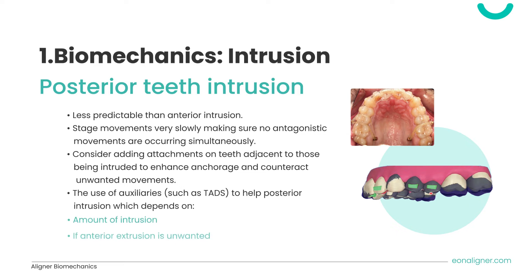In cases where posterior intrusion is desirable, consider the following. With clear aligners, posterior intrusion is less predictable than anterior intrusion. Plan movements at a slow rate, making sure no antagonistic movements occur simultaneously. Add attachments on teeth adjacent to those being intruded to enhance anchorage. When intruding posterior teeth, consider the use of auxiliaries such as temporary anchorage devices (TADs), whose use depends on the amount of intrusion required, and also when counteractive extrusive forces of anterior teeth need to be avoided.